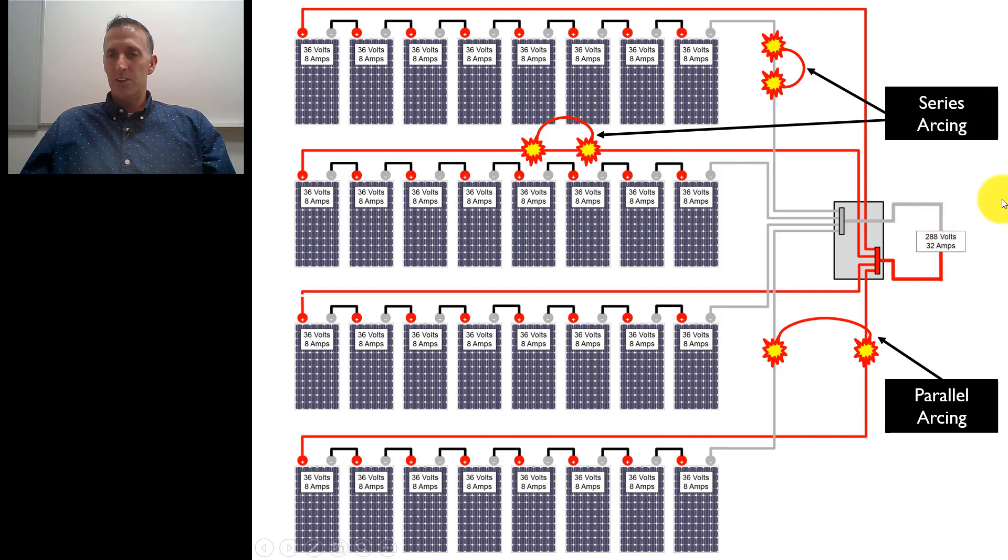And then the electrons flow back through the inverter and come back on the positive side. They split up in the combiner box, then flow back out along the positive side, go through each one of these modules, and come back out again. So that would be our circuit. That's a normal operating circuit.